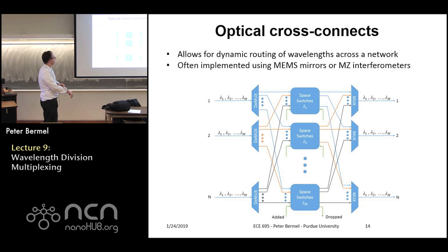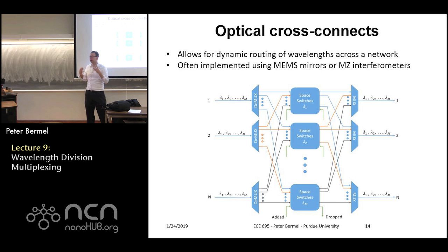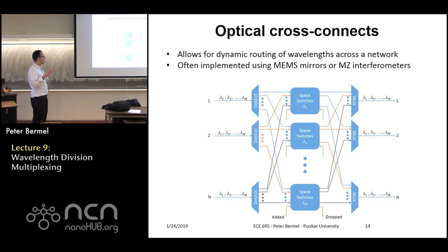Optical cross-connects generalize the wavelength router by allowing arbitrary input and output wavelengths across n channels — fully tunable in an n×n configuration incorporating add-drop components. This combines dynamic filter tuning with add-drop functionality. MEMS mirrors are really necessary to do something like this; otherwise it's generally not feasible.